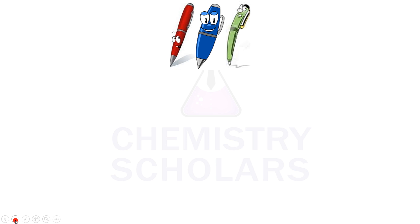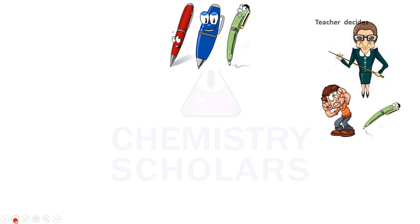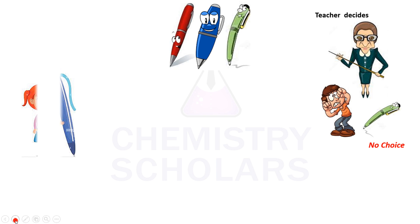Let's learn stereoselective and stereospecific reactions with a simple example which you will never forget. Suppose there are three pens that you are given and the teacher decides which pen you will choose for writing. So you have basically no choice and the color of the pen completely depends upon your teacher.